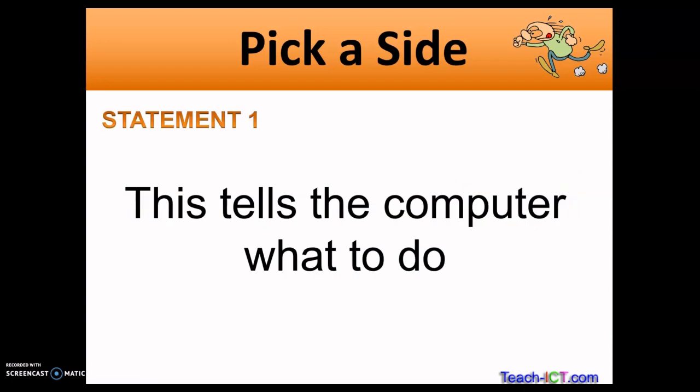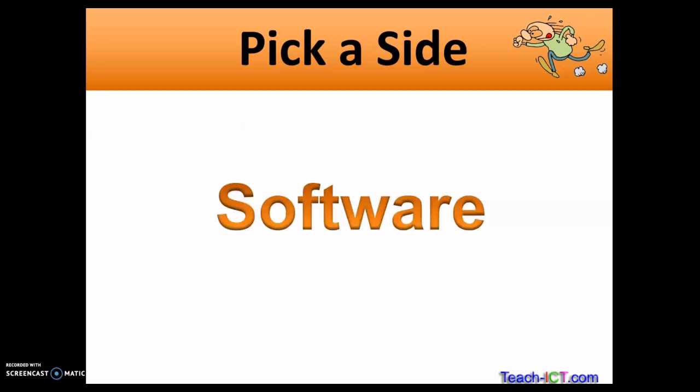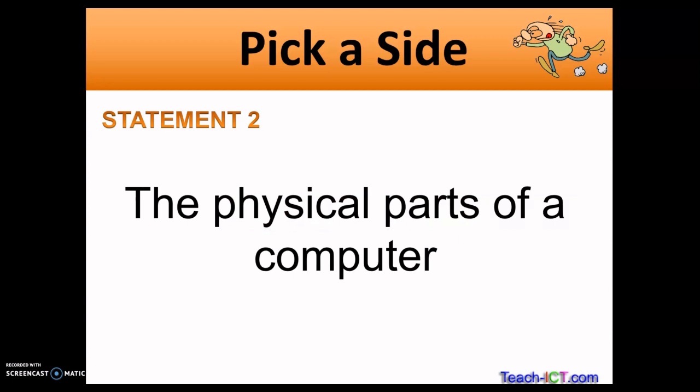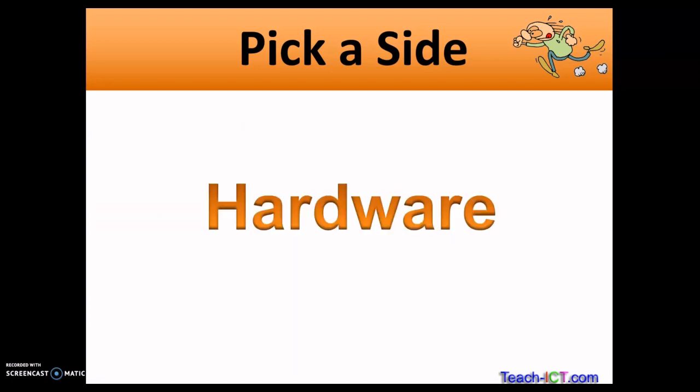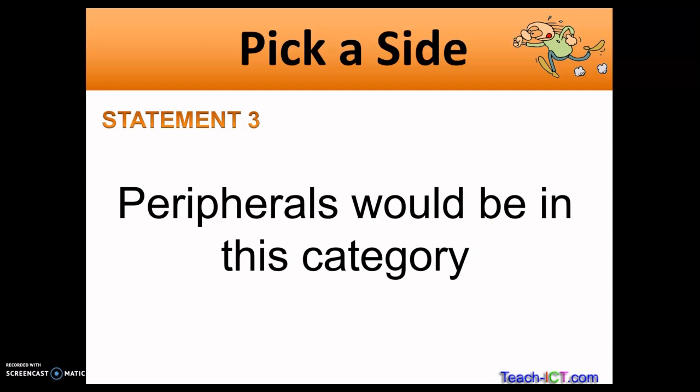This tells the computer what to do. Is it hardware or is it software? The answer is software, because software is just a bunch of code that tells the computer what to do. Next statement: physical parts of the computer. Are the physical parts of the computer hardware or are they software? The answer is hardware. Next statement: peripherals. Peripherals are anything that can be plugged into a computer to enhance its features, such as a keyboard that allows you to type, a printer that allows you to print.